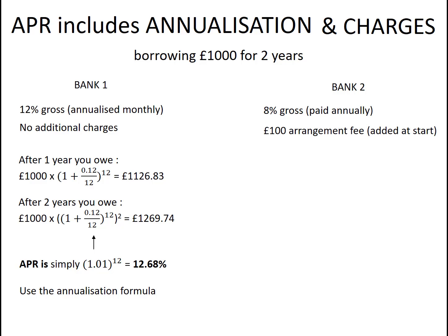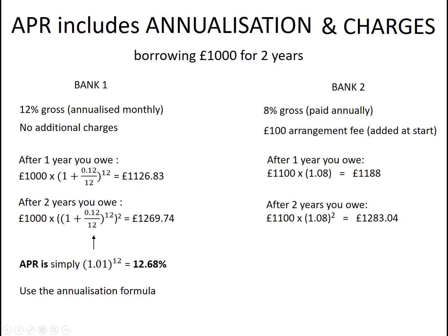In the case of Bank 2, the situation is slightly different. We don't have any annualization to worry about — just this £100 arrangement fee that gets added on to the loan at the outset. This means that at the start of the first year of the loan, you actually owe the bank £1,100. That gets charged interest at 8% on the £1,000 you actually walked away with. So at the end of the first year you owe £1,188, and at the end of year two you owe £1,283.04.